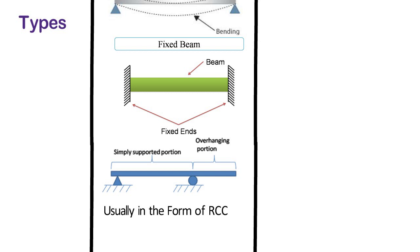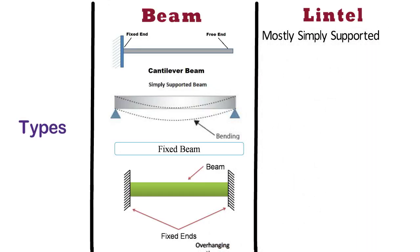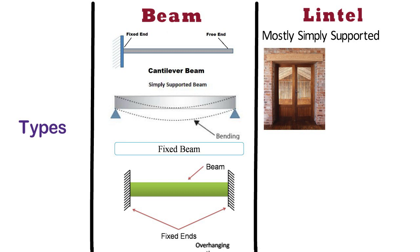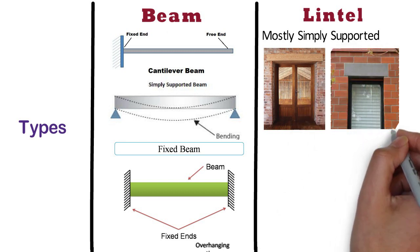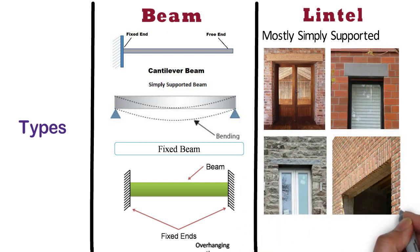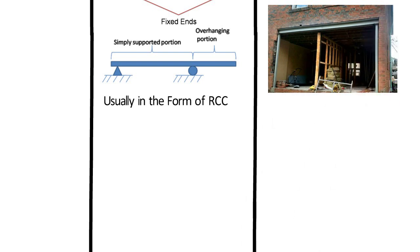Whereas, lintels are mostly simply supported. Types of lintels are wooden lintel, concrete lintel, stone lintel, brick lintel, steel lintel, etc.